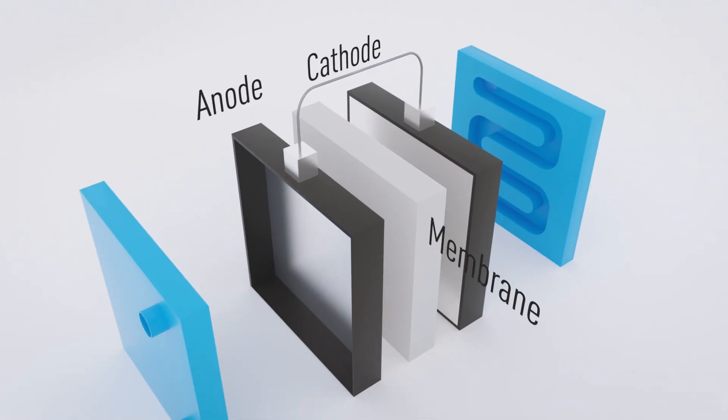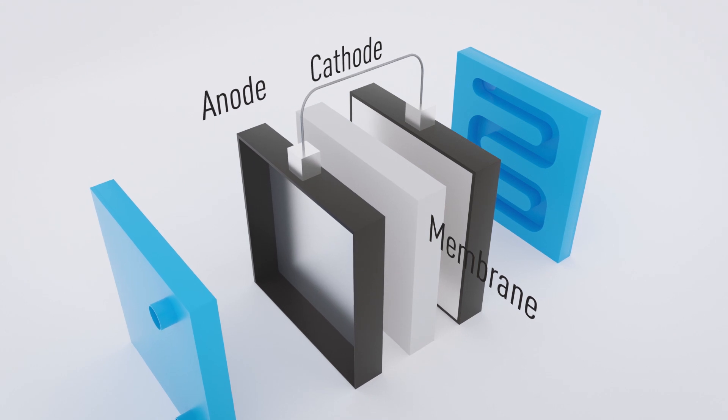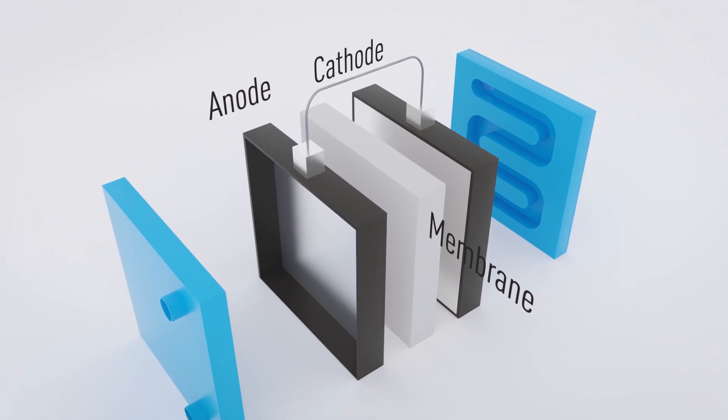A hydrogen fuel cell consists of two electrodes, an anode and a cathode, separated by a membrane.